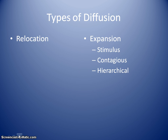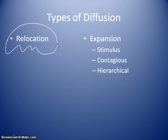So first of all, we're just going to talk about what are the different types of diffusion. We have really two main categories. I like to talk about them in terms of umbrellas — whenever we have terms that deal with multiple ideas. So we have relocation diffusion, which doesn't have anything that goes with it, it's just relocation diffusion. And then we have the umbrella of expansion diffusion.